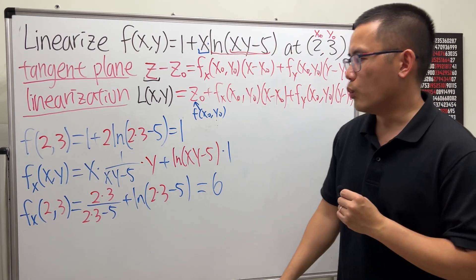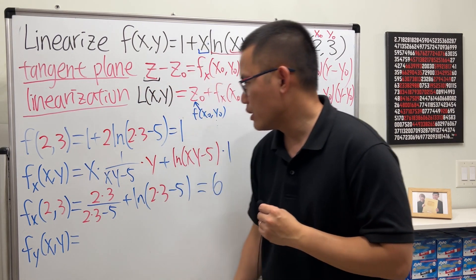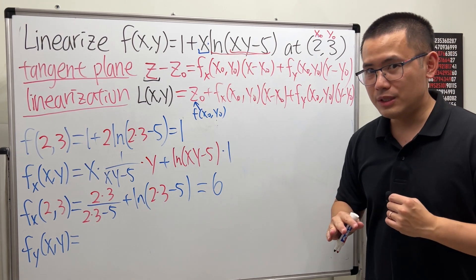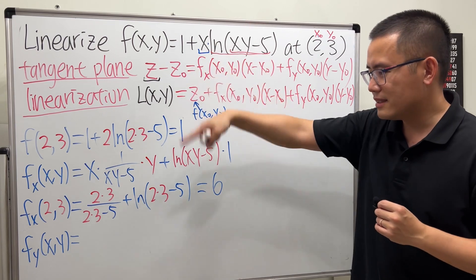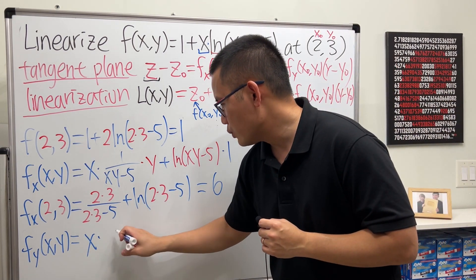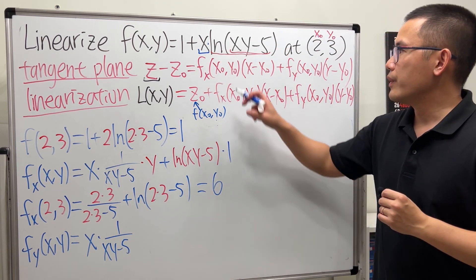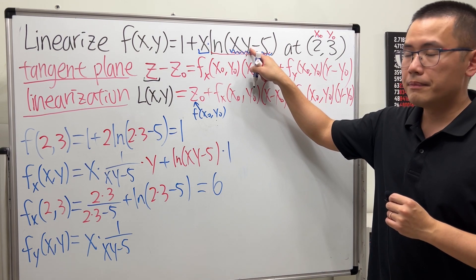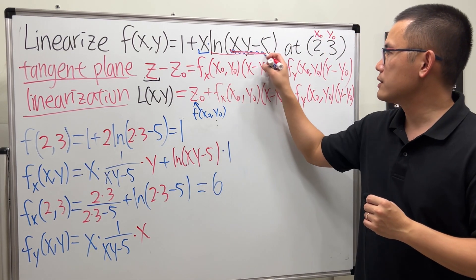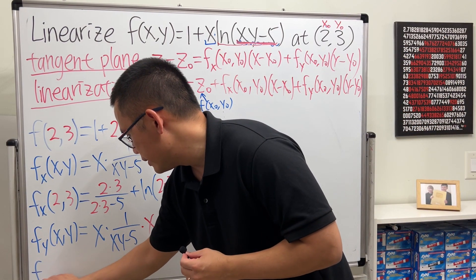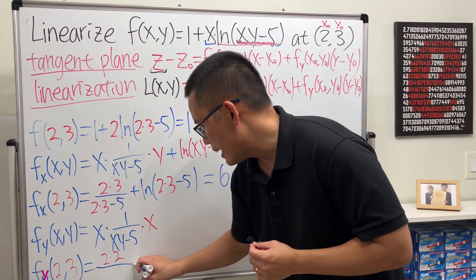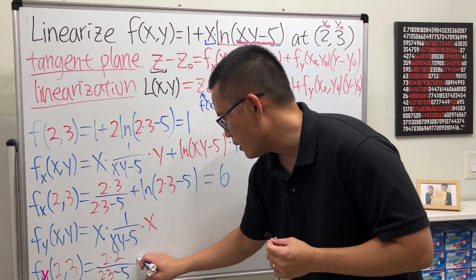Now let's do the partial derivative with respect to y. We only have y inside ln(xy − 5), so no product rule needed. We write the constant multiple x, then differentiate ln(xy − 5): that gives x · (1/(xy − 5)) · x = x² / (xy − 5). Plugging in (2, 3): f_y(2, 3) = 4 / (6 − 5) = 4/1 = 4.